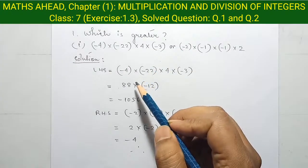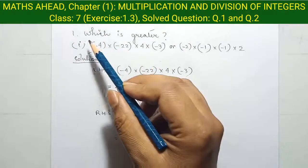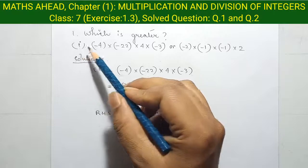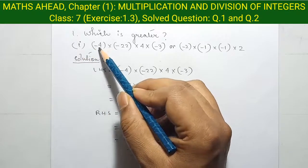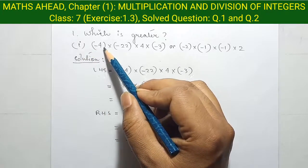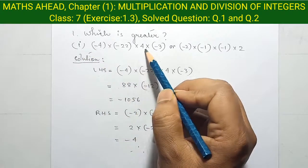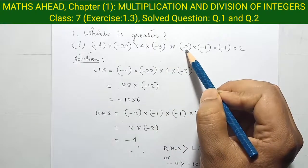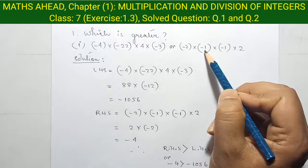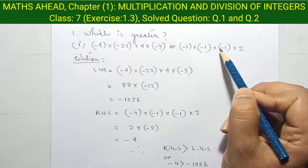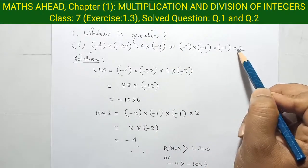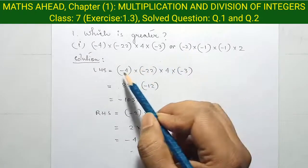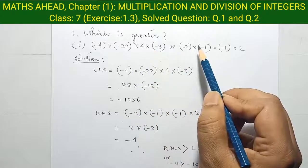Exercise 1.3, Question 1: which one is greater? We have minus 4 into minus 22 into 4 into minus 3, or minus 2 into minus 1 into minus 1 into 2. From this, we have to find which one is greater.